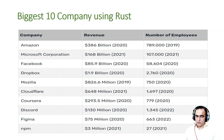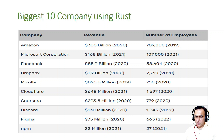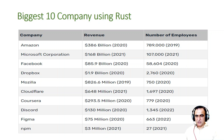The biggest 10 companies using Rust: Amazon, Microsoft, Facebook, Dropbox, Mozilla, Cloudflare, Coursera, Discord, Figma, and npm. You can imagine the power of Rust — not only these 10, but thousands of companies are giving their trust to Rust and have started to build their applications in Rust because of the memory and thread safety, which is the biggest advantage, giving 100% performance on computer hardware.